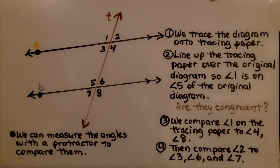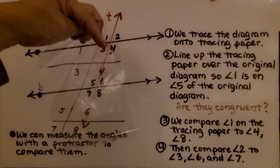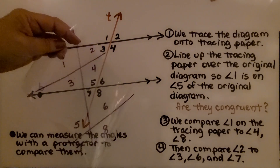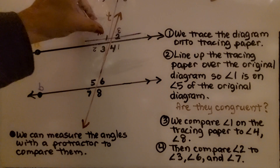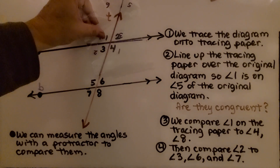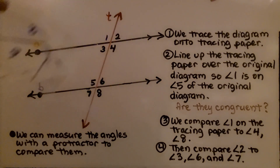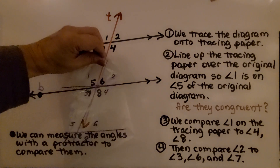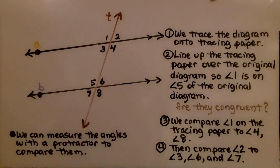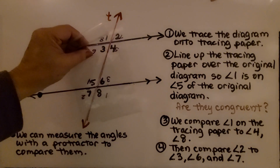We can also compare angle two — that's right here on my tracing paper. We can compare it to angle three. If I turn this around, here's angle two lining up with angle three. And angle two also lines up with angle six and with angle seven.